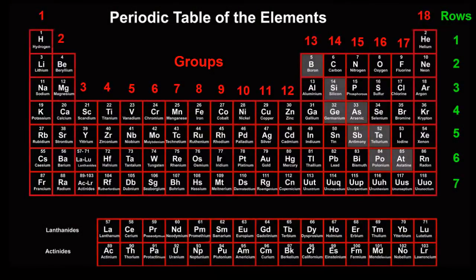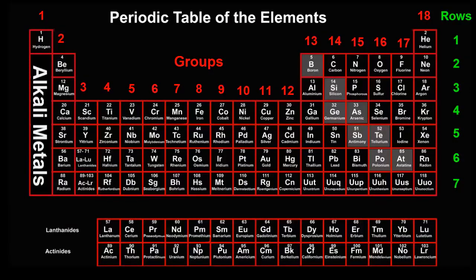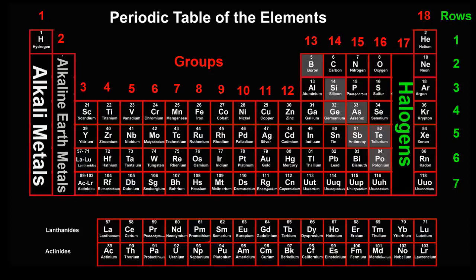Some groups even have family names. Group 1 elements are called the alkali metals. Group 2 elements are the alkaline earth metals. Group 17 are the halogens, and group 18 are the noble gases.